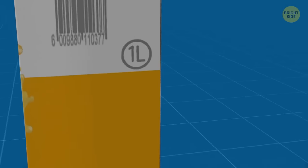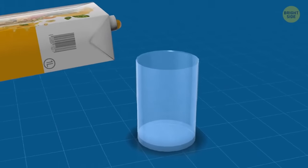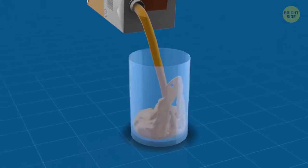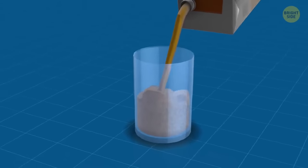To avoid spilling juice right onto your t-shirt, try pouring it from the other side of the carton. This way, it sloshes less and it's easy to control.